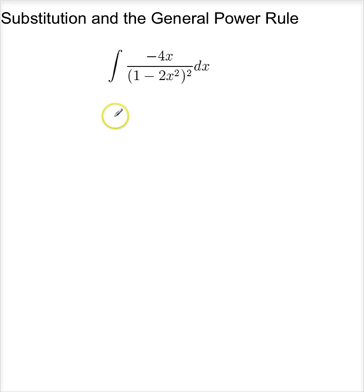Now for this function, we're going to want to do a couple of things. First of all, we're going to let u equal 1 minus 2x squared. Then du is minus 4x dx. So here is du, and I'm going to rewrite this as u to the negative 2 du.